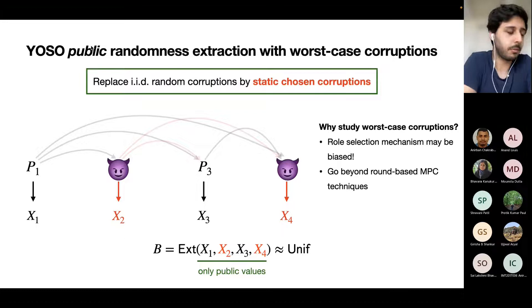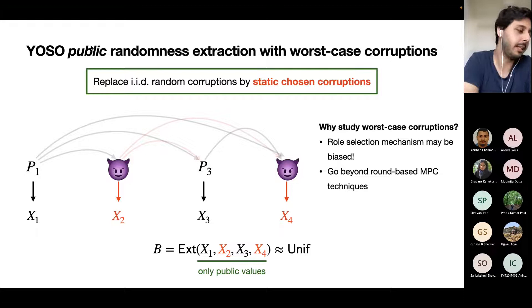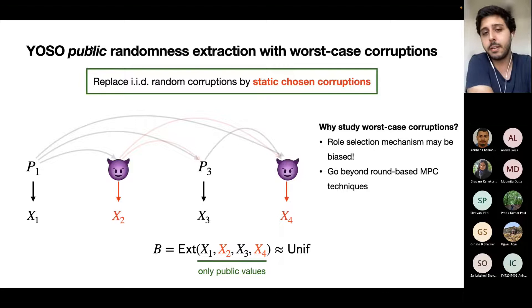The second reason is that worst-case corruptions forces us to go beyond round-based MPC techniques. We cannot just use a committee-based protocol design, because with random corruptions a committee would have strict honest majority with high probability. But with chosen corruptions, the adversary could concentrate corruptions inside the committee and give it a dishonest majority.